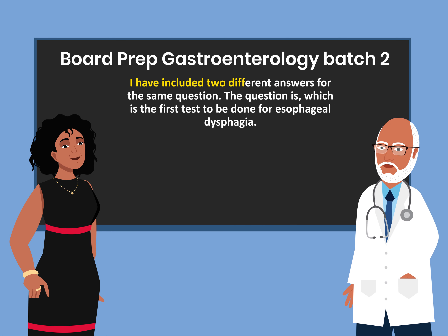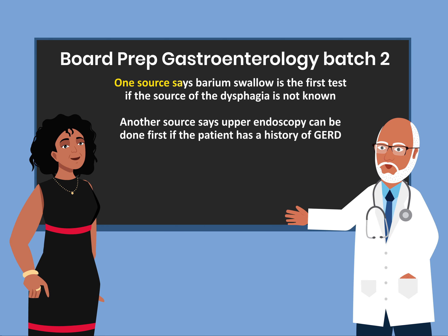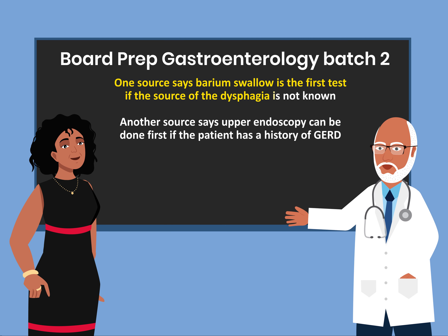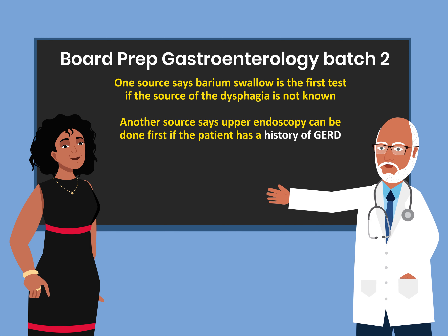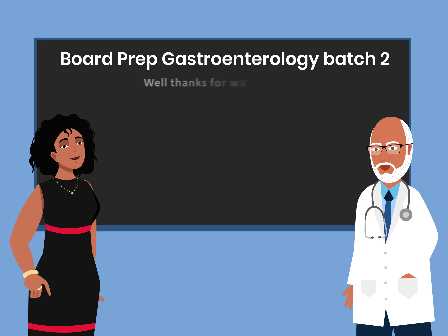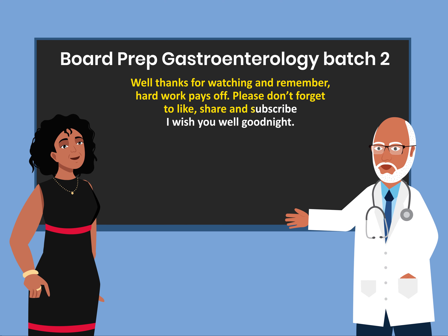I have included two different answers for the same question. The question is: which is the first test to be done for esophageal dysphagia? One source says barium swallow is the first test if the source of the dysphagia is not known. Another source says upper endoscopy can be done first if the patient has a history of GERD. Thanks for watching and remember hard work pays off. Please don't forget to like, share, and subscribe. I wish you well. Good night.